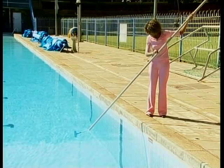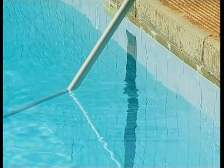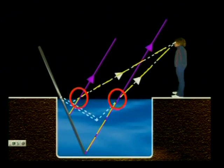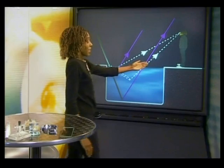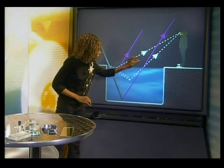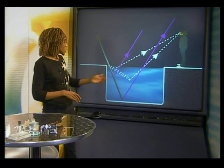Remember that when we put the pole into the pool, it looked like it changed shape. We discovered in lesson two that this was because the light from the pool bends as it leaves the water. Here, we can see that the light bends as it leaves the water and our brains think that the light travels in straight lines, so it appears as if the pole has been bent. We call this refraction.